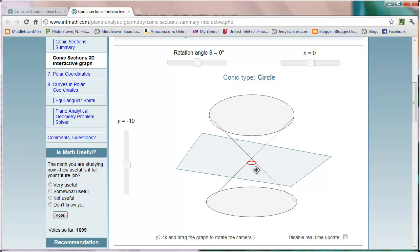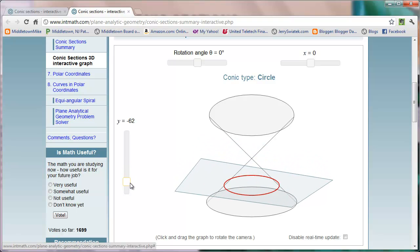When the plane is perpendicular to the cones, we get a circle, and depending on where it intersects, the size of the circle could change.